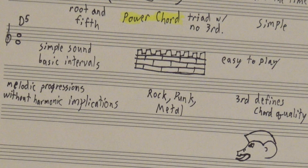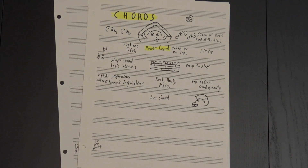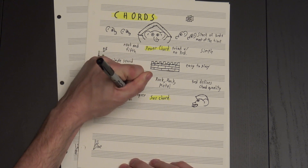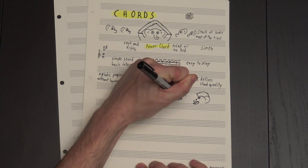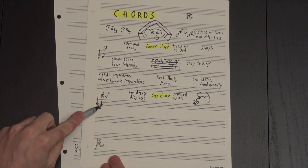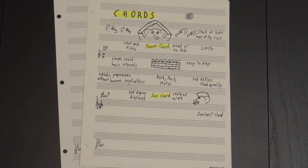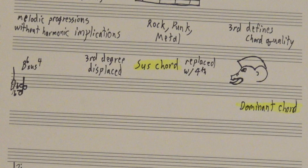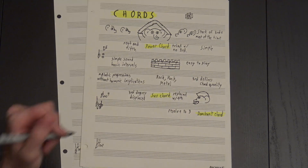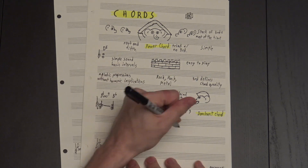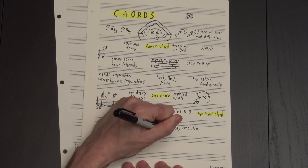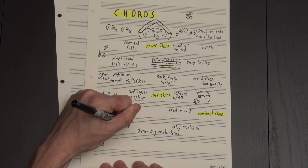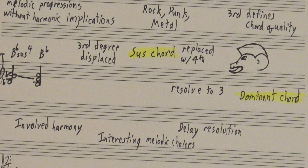Moving a little further, we come to what are known as suspended or sus chords. These are chords in which the third degree has been in some way displaced. Usually, this means replacing it with the fourth degree. This fourth works a lot like it does in a dominant chord, in that it wants to resolve back down to that three. This lets you delay resolution a little bit, use more interesting melodic notes, and get some more involved harmonic movement out of pretty basic chords.